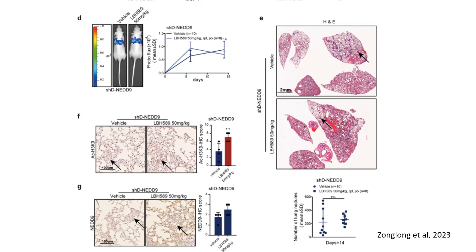In panel E, H&E staining reveals the extent of lung metastasis in NET9 knockdown mice compared to controls. Arrows indicate metastatic nodules, which are visibly fewer in the NET9 knockdown group. Quantification confirms this finding, with significantly fewer lung nodules in NET9 knockdown mice, emphasizing NET9's role in metastasis.